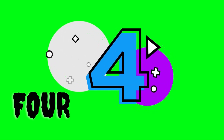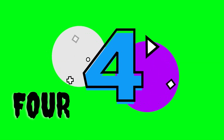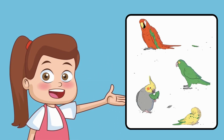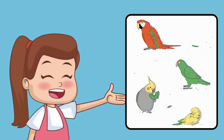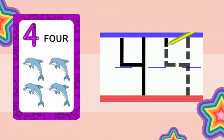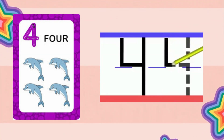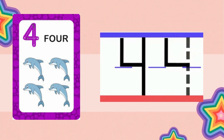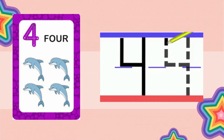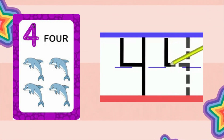Number 4. F-O-U-R, 4. See these beautiful birds. Can you please help me count them? 1, 2, 3, 4. 4 birds. To write number 4, we will start at the top and do a straight line down to the middle. Then we will do a straight line across. Then again go up to the top and put a straight line down.